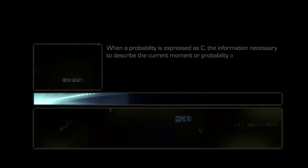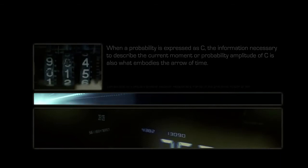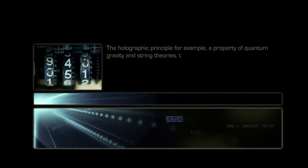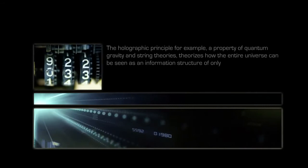When a probability is expressed as C, the information necessary to describe the current moment or probability amplitude of C, is also what embodies the arrow of time. The nature of the arrow of time is one of the biggest unsolved problems in physics, and has been responsible for many new popular interpretations. The holographic principle, for example, a property of quantum gravity and string theories, theorizes how the entire universe can be seen as an information structure of only two dimensions.